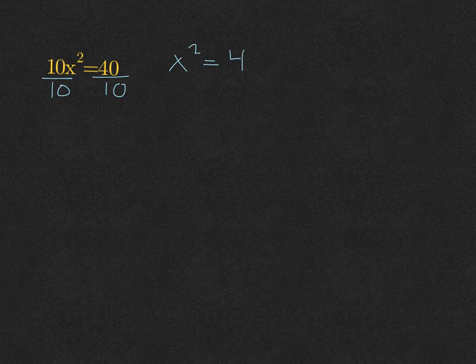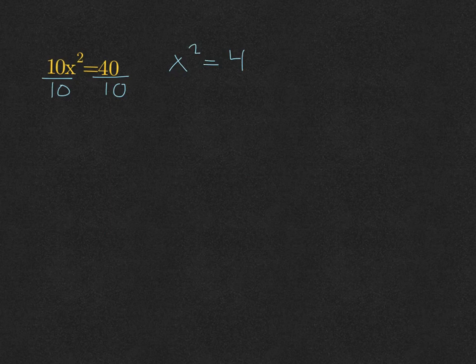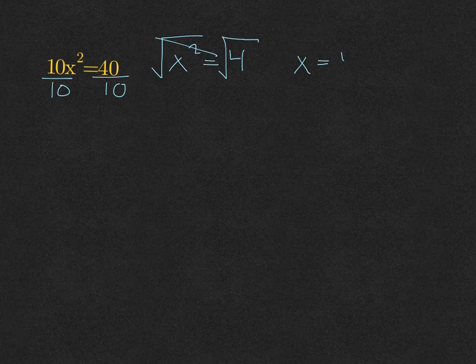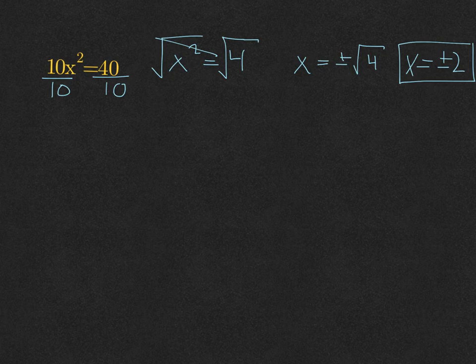You may be able to think of the answer from here. What number squared is 4? It would be 2 and negative 2. Let's verify by solving the equation. We square root both sides to undo the squared. We end up with x equals plus or minus the square root of 4. The square root of 4 is 2, so x equals plus or minus 2.